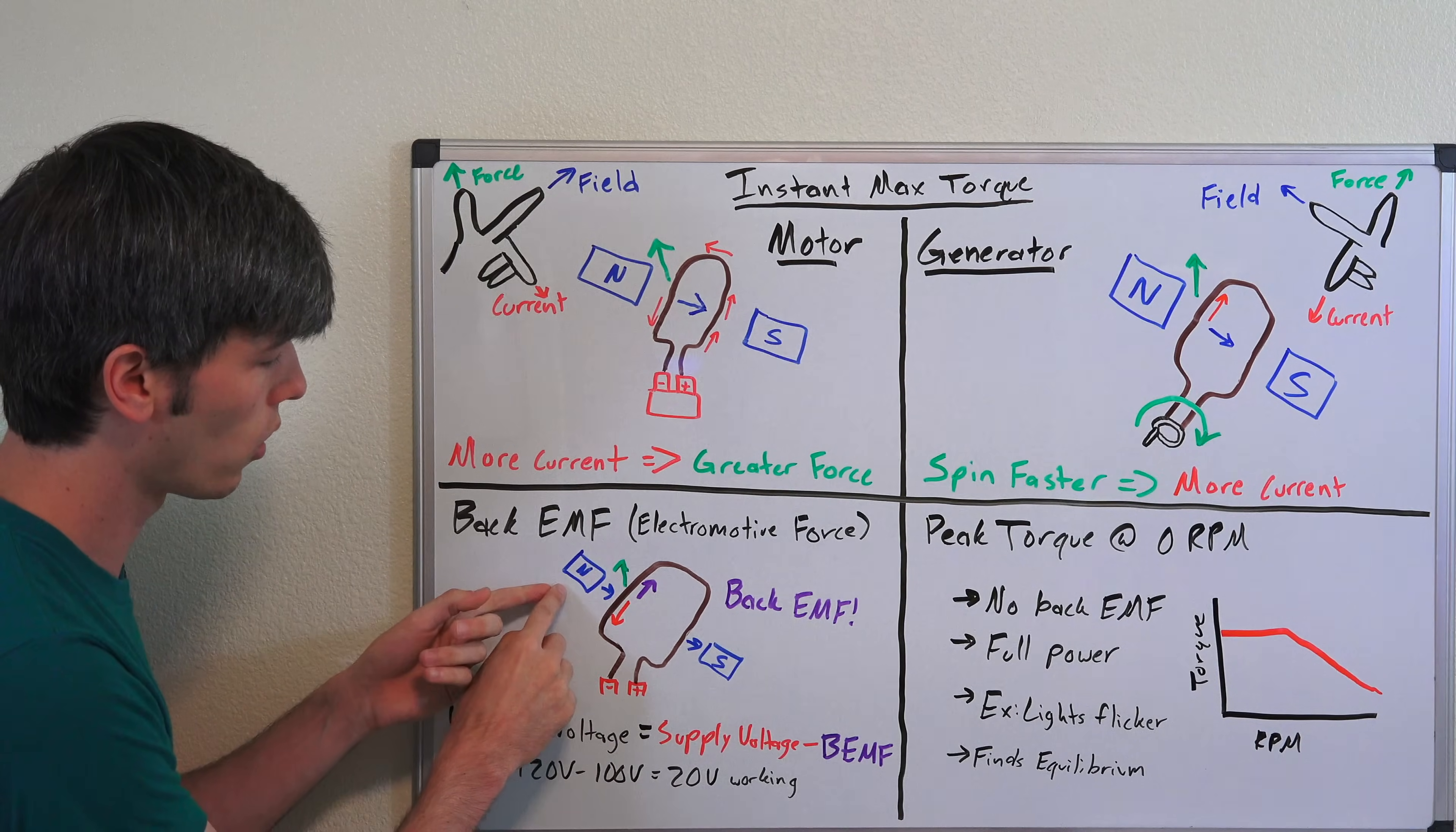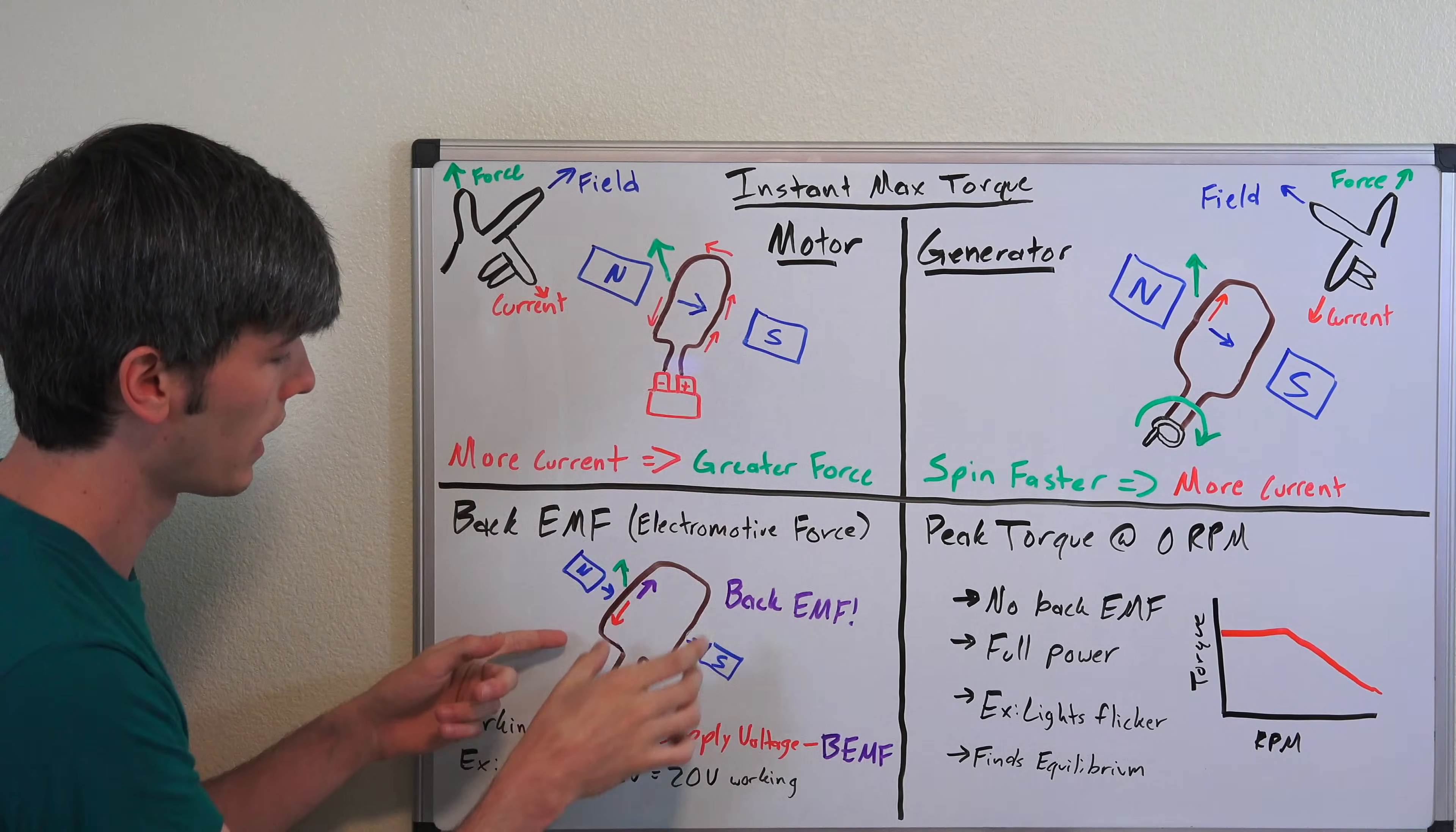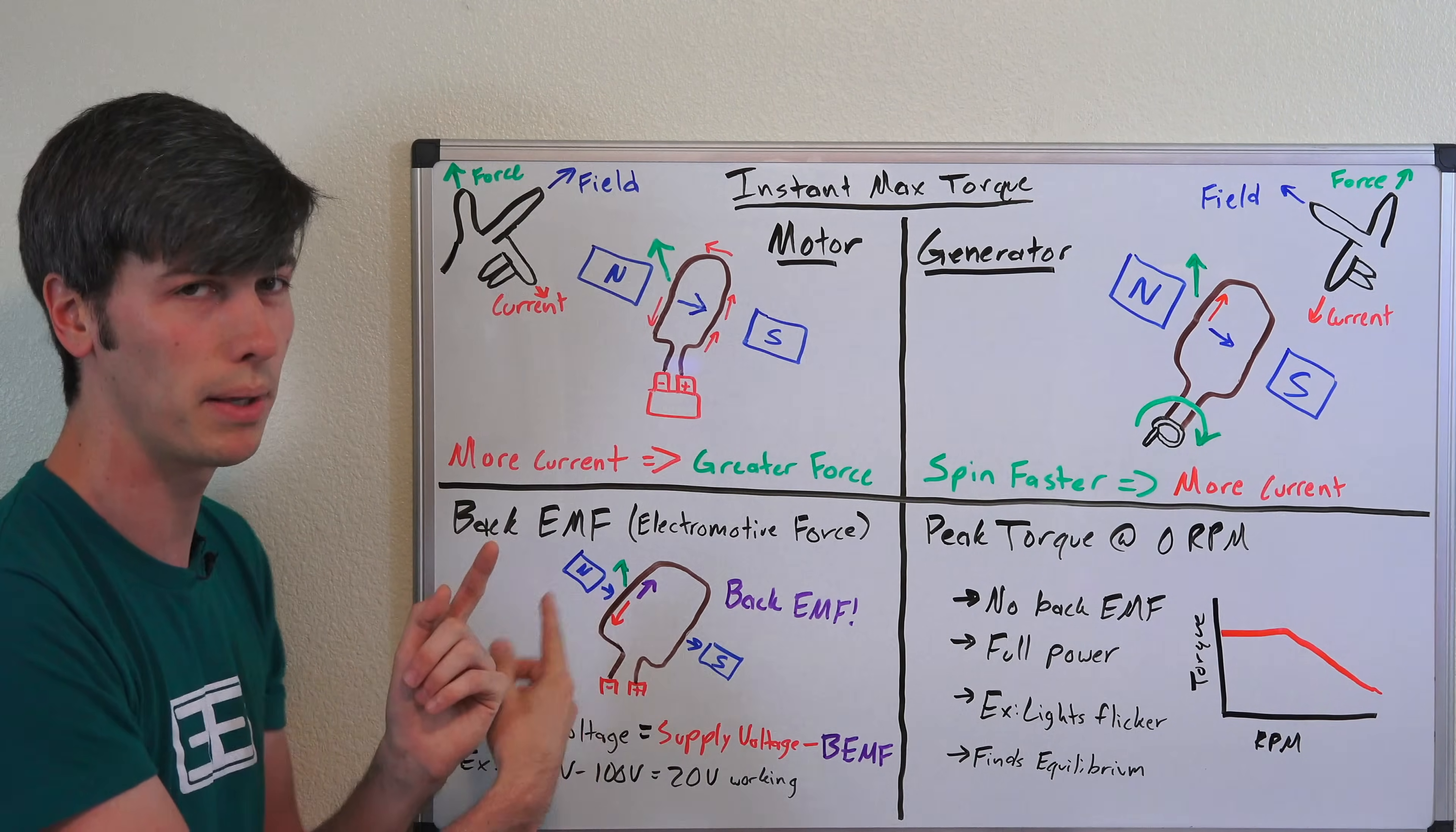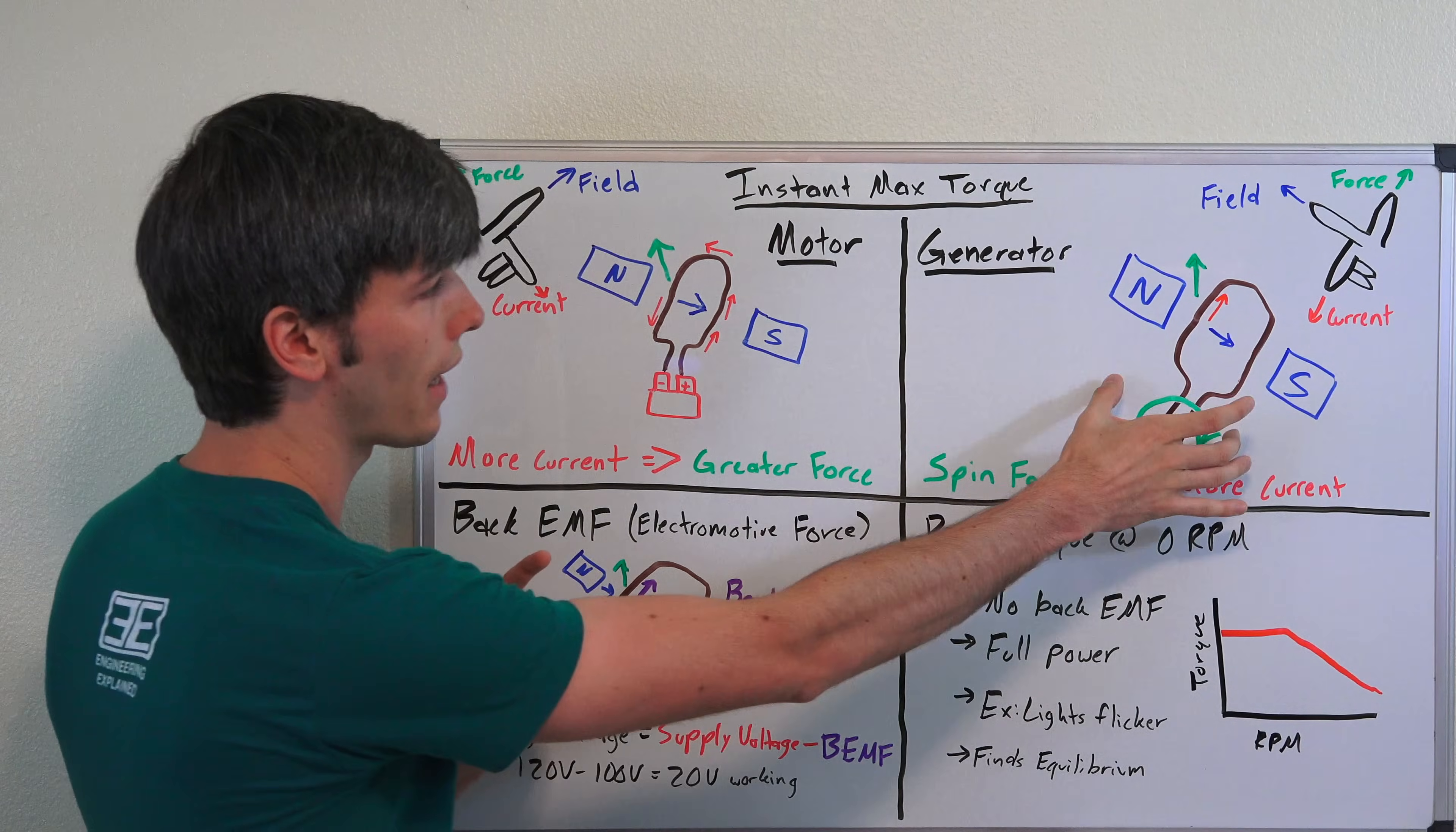But basically you have to keep in mind that once this is spinning, as it rotates it's acting somewhat like a generator and as a result it has that back EMF. So your working voltage is equal to your supply voltage minus your back EMF.